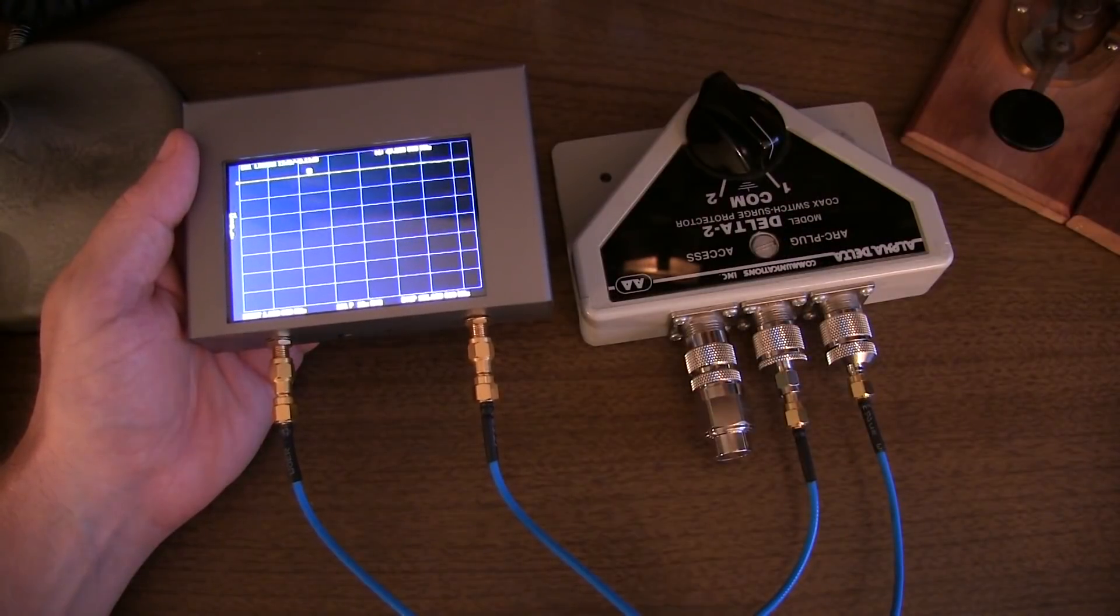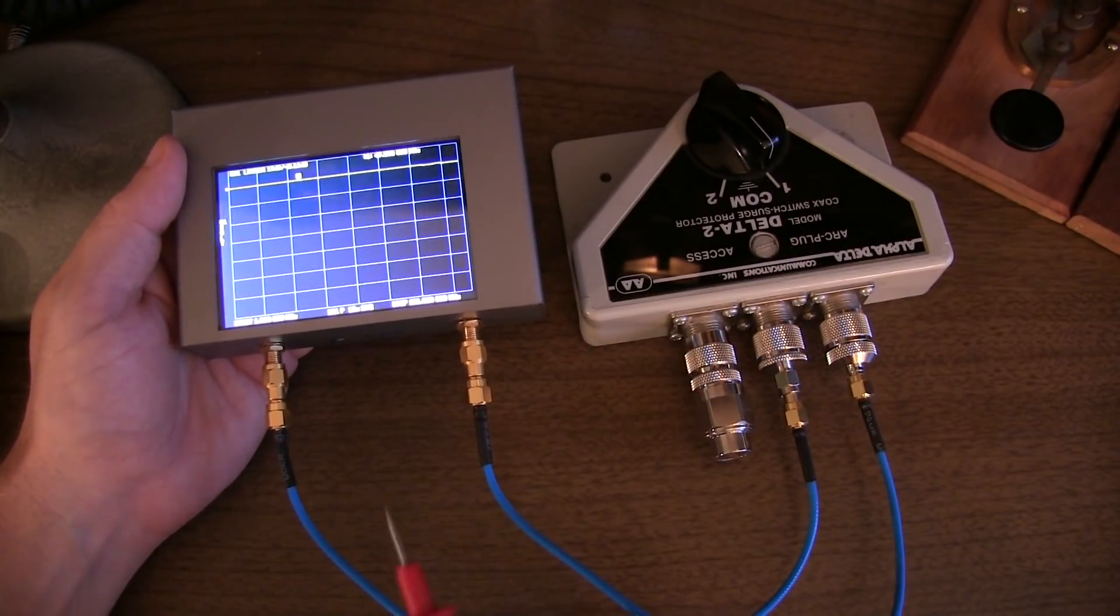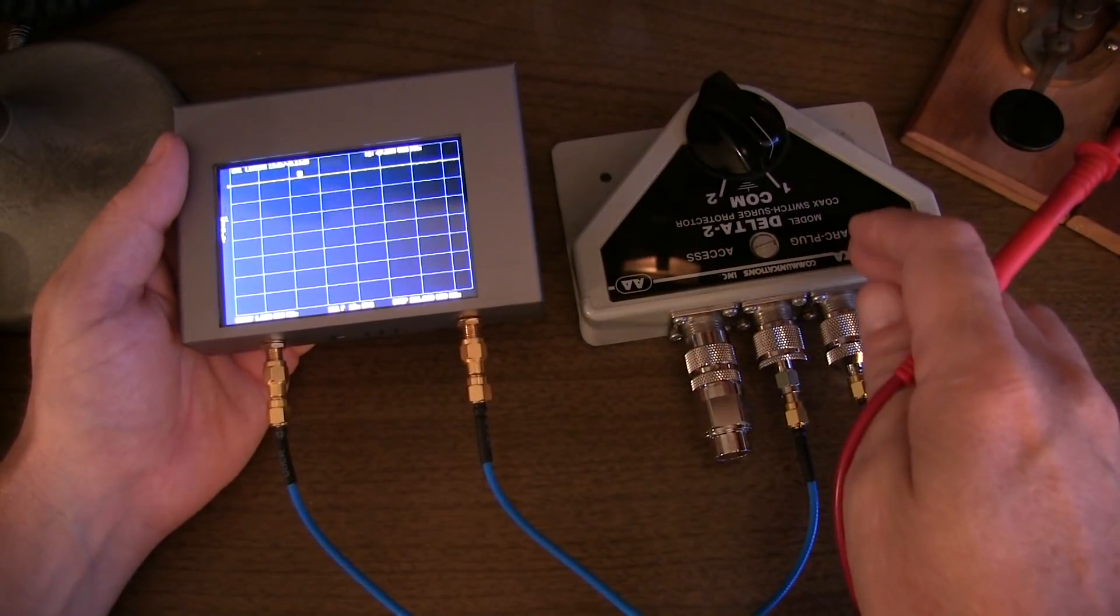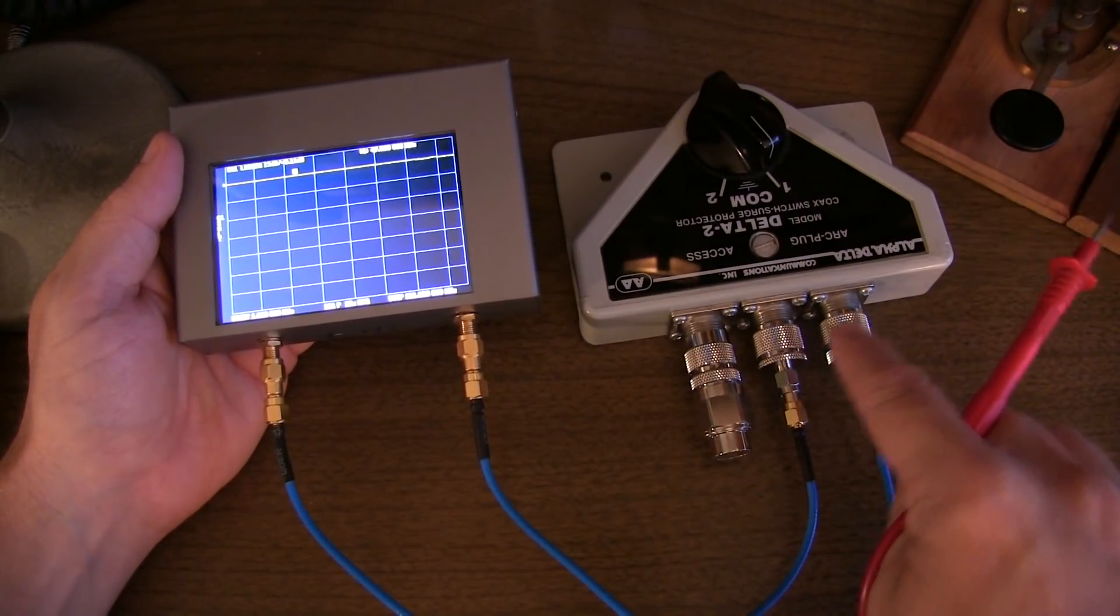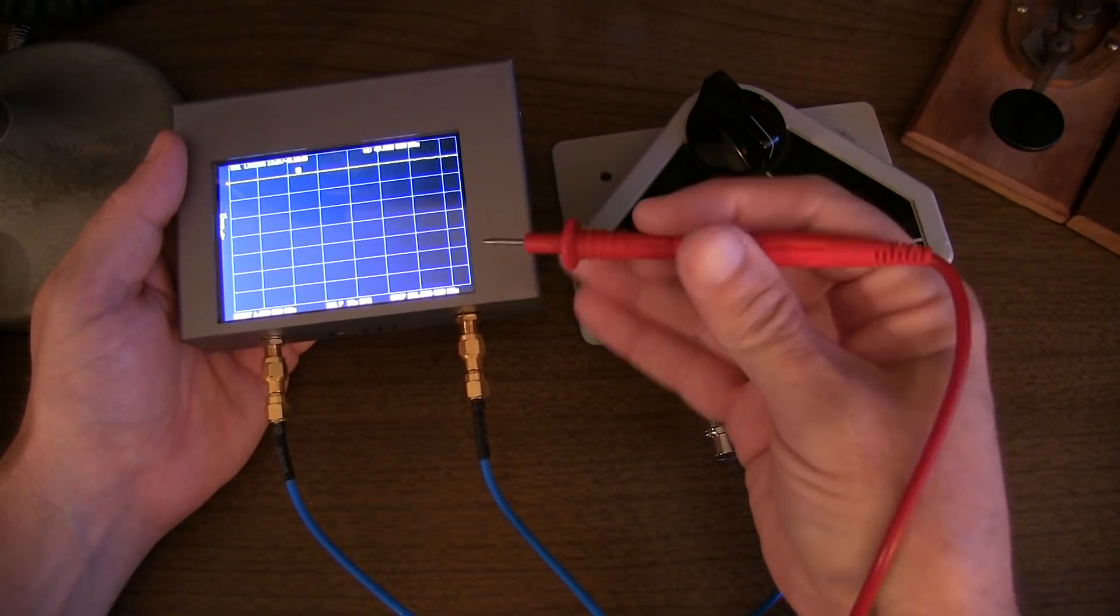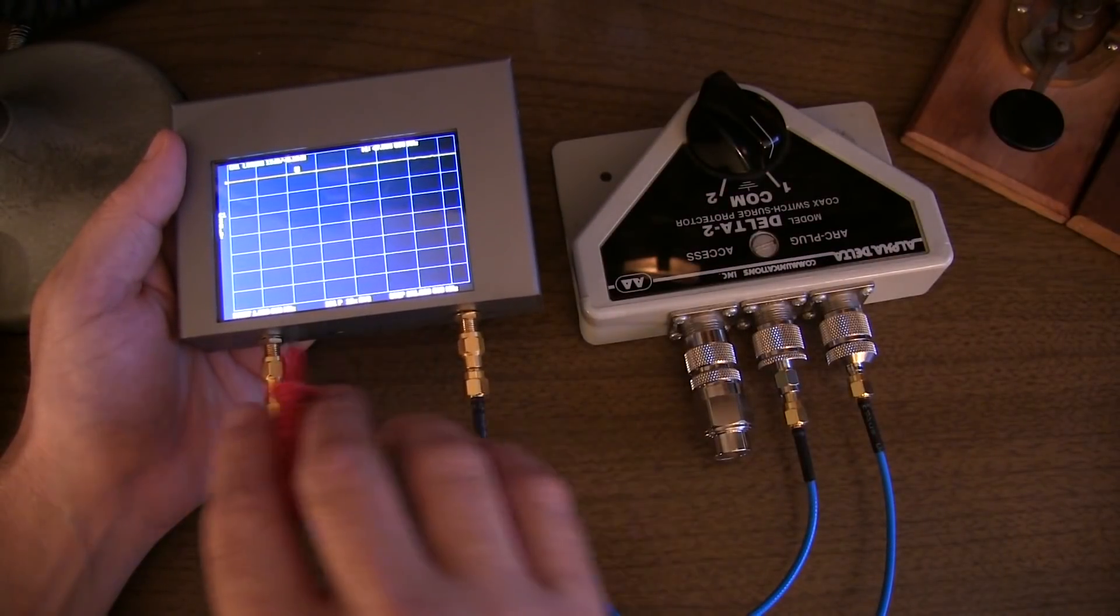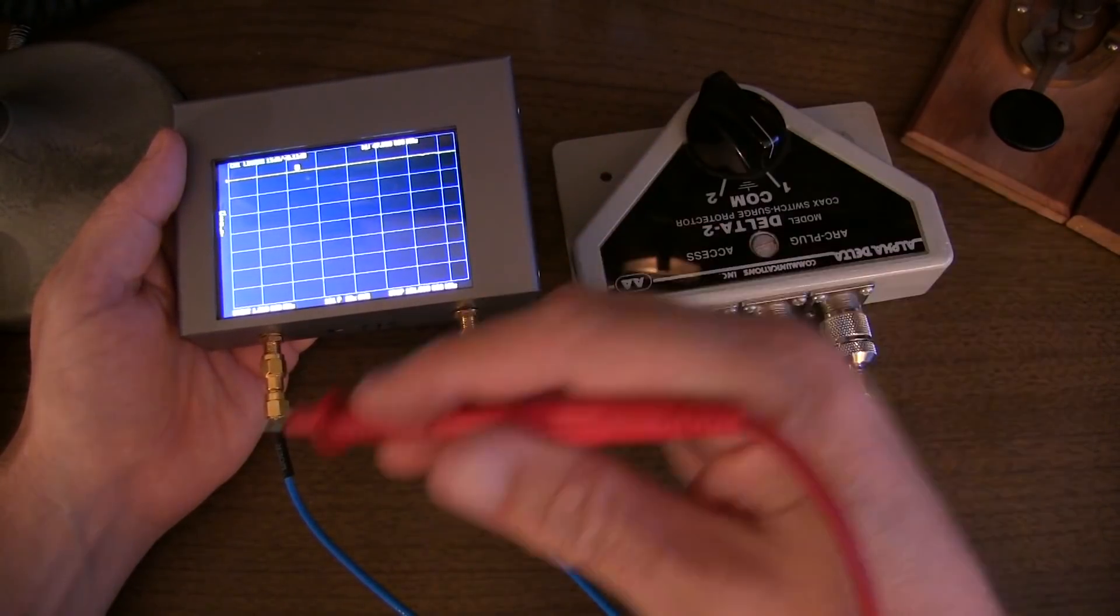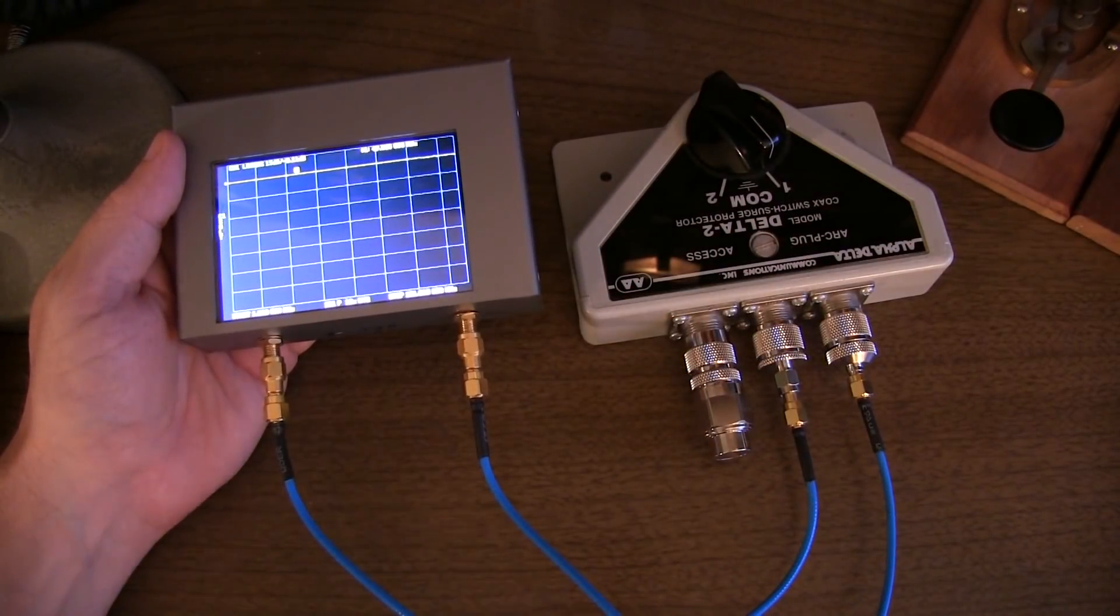So now one way to test this is to use a nano VNA and measure S21 or the insertion loss. So I've got my nano VNA hooked up to the switch to the common port and port number one and I've terminated port number two. I've adjusted the stimulus frequency on the nano VNA from 1 megahertz to 151 megahertz. So I have a 150 megahertz span and we've calibrated properly over that frequency range. So we're all good to go to make the measurement.